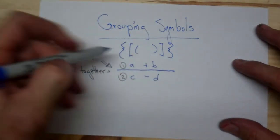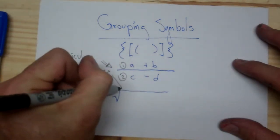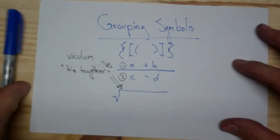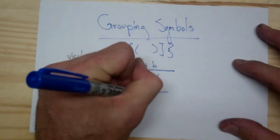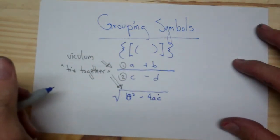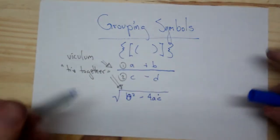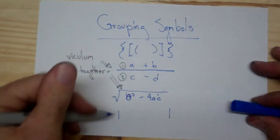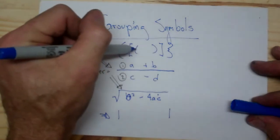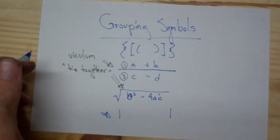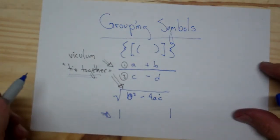This is also true for the radical — the bar on top of the radical is also a vinculum, and it ties together everything inside the radical, like b squared minus 4ac, which would be the discriminant of your quadratic formula. And then of course the last one would be the absolute value, which is an operator and acts just like parentheses, brackets, and braces. So we have all different types of grouping symbols that get tied together.